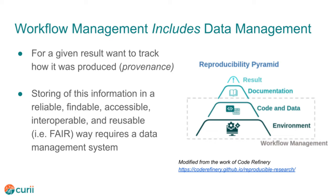Scientific workflows are important for reproducibility because they encode all of the steps, inputs, and outputs that make up a data analysis. A workflow management system executes a workflow for particular input data in order to produce a result. Reproducibility requires that for a given result we know how it was produced — this is called provenance. The more detail, the better. This means precisely identifying the input datasets, workflow steps, software versions, hardware resources, and other details that will enable someone to later recreate a compatible environment that will produce the same results given the same initial inputs. We could try and record all of this by hand, but computers are good at remembering things, and workflow management systems already know all these things.